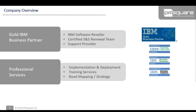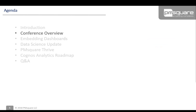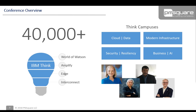IBM Think was a very big event — there were 40,000 estimated attendees between business partners, IBMers, and customers; more than 300 technical certification tests available to attendees; and over 1,000 speakers, technical presentations, and breakout sessions. It was also a unique event — the first tech conference of its kind where IBM merged various technology conferences from throughout the year into one mega-conference covering all IBM technology, organized into four main focus areas: cloud and data, modern infrastructure, security and resiliency, and business and AI.